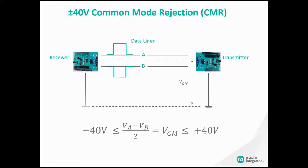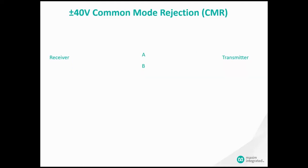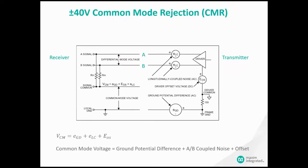First up is the common mode rejection. The MAX 33072E can reject up to a plus or minus 40 volt signal that is common in both A and B data lines. This can happen, for example, when there's a long data cable to a factory floor and electromagnetic noise from other devices such as motors, solenoids, or actuators can influence it.